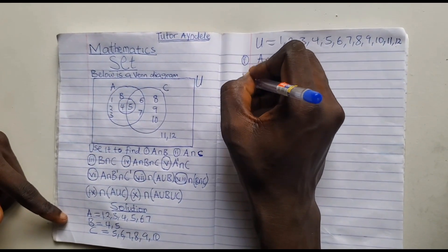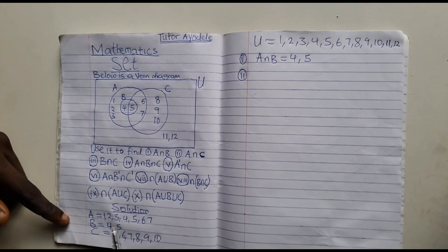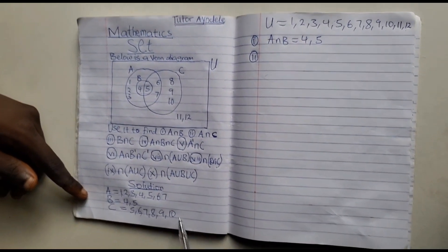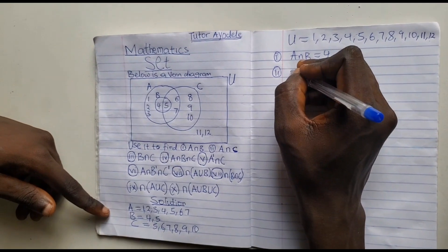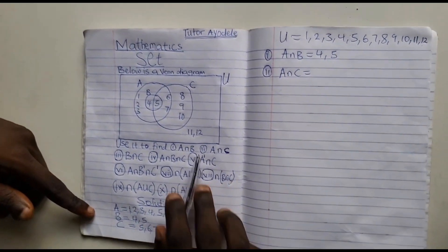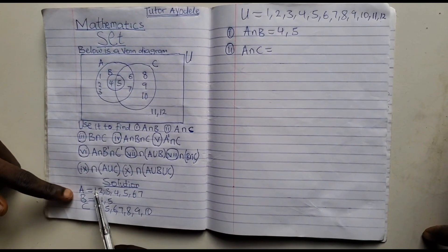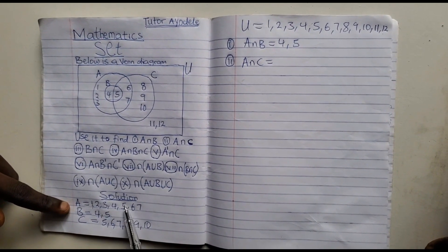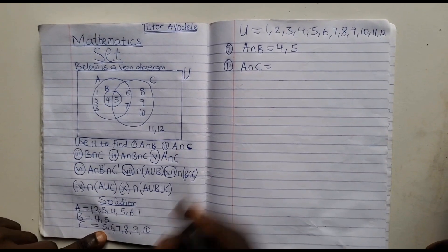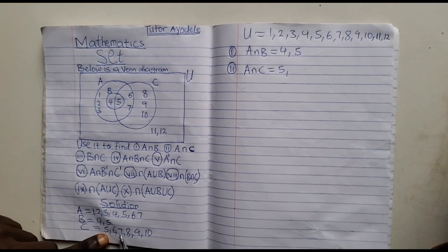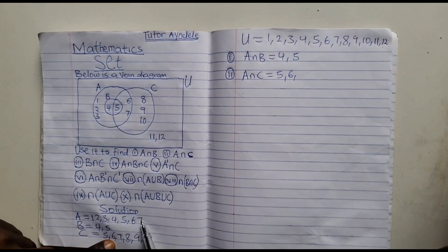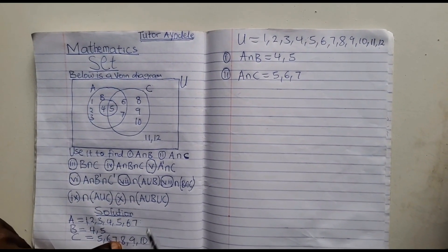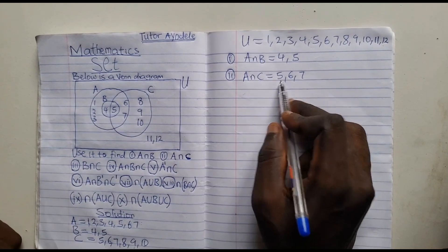Question two: A intersect C. What are those elements that are present in A that are also present in C? Checking: 1 — no; 2 — no; 3 — no; 4 — no; 5 — yes, five is common in both; 6 — yes, six is also here; 7 — yes, seven is also here; 8, 9, 10 from C are not in A. So A intersect C = {5, 6, 7}.